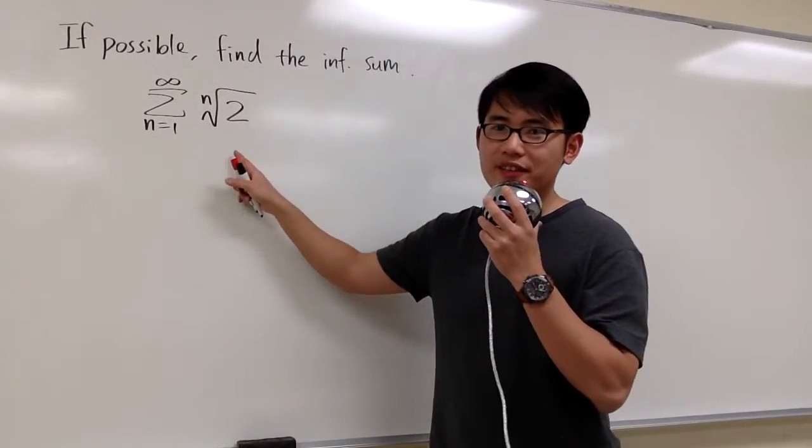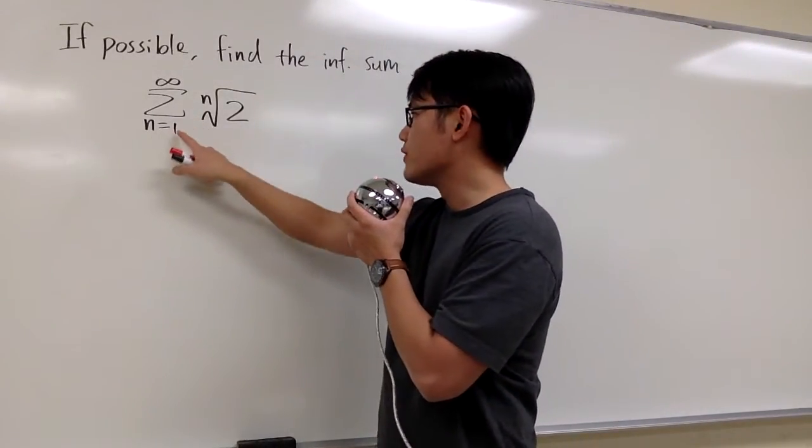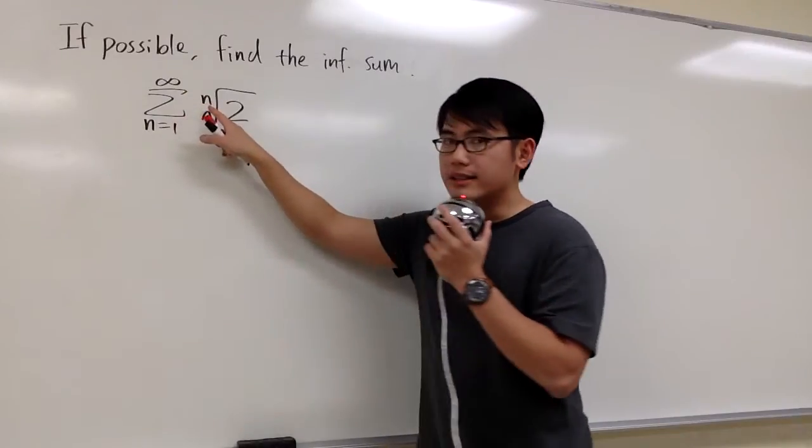If possible, we are going to find the sum for this infinite series, sigma when n goes from 1 to infinity, the nth root of 2.